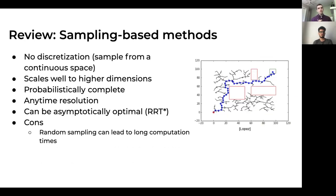On the other side are sampling-based methods, which emerged because of the downsides of graph-based methods. Their advantages include no discretization since they sample from continuous state space, they scale well in higher dimensions, and they are probabilistically complete — as the number of samples approaches infinity, the probability of finding a solution approaches one. They also have anytime resolution, meaning the longer you run them the higher resolution your solution will be. They can also be asymptotically optimal, like RRT*, where as the number of samples tends to infinity, the probability that the path found is optimal approaches one.